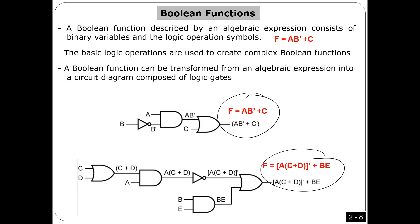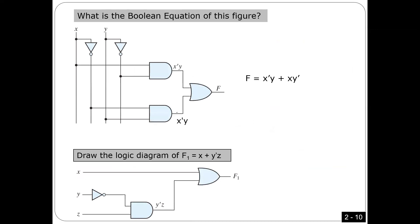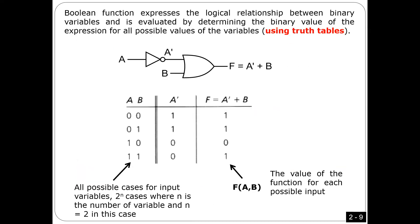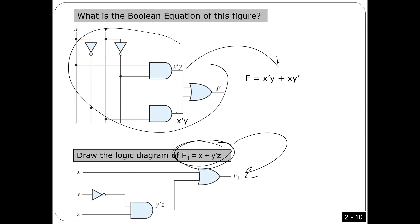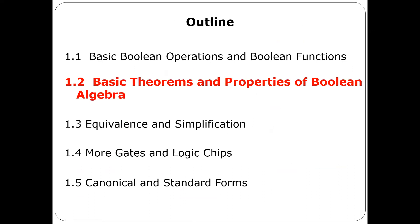Number two: using these three basic operations, we can create functions. I gave some examples. When you have an equation, you should be able to draw a circuit; if you have a circuit, you should be able to write an equation. Then I jumped to section 1.4: using these basic functions, I'm going to use them to create gates — NAND, NOR, XOR, XNOR — and use them as building blocks.